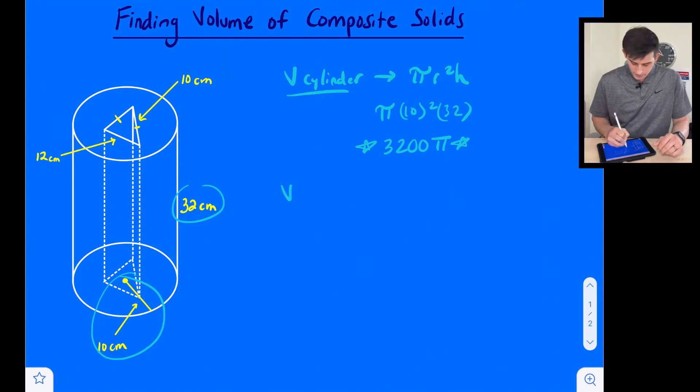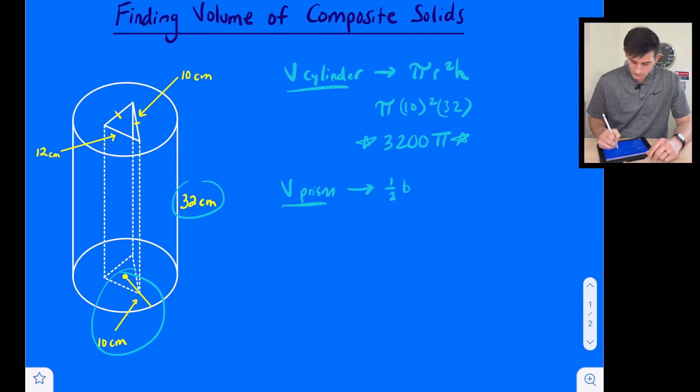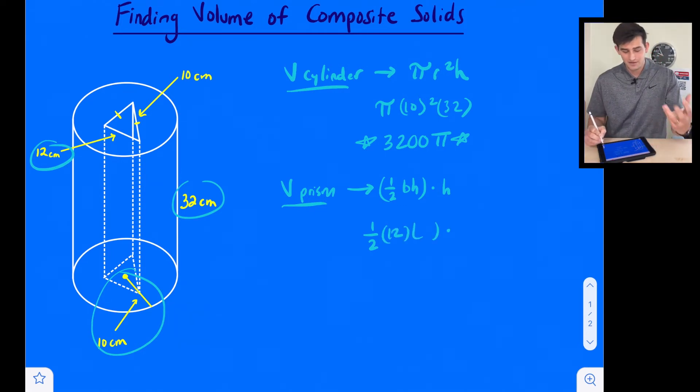Now we need to find the volume of our prism. For the volume of a prism, remember it's just area of the base times the height. The base here is going to be these triangles, so we need to find the area of one of these triangles. We can write the area of the triangle is one half base times height, and then we need to multiply that by the height of the actual prism, which in this case would be the same as the height of the cylinder, 32 centimeters. If we think about one half, we see the base here of our triangle is 12, but we're not explicitly given the height of the triangle. And the height of the cylinder is 32.